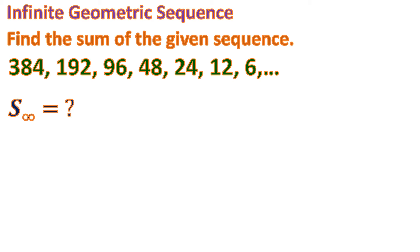The terms keep decreasing but will never go below zero. Similarly, if the sequence alternates with negative values, the numbers still get closer to zero. Whether it's positive and decreasing or negative and increasing toward zero, a sum is possible. Now let's derive the formula for the sum of an infinite geometric sequence.